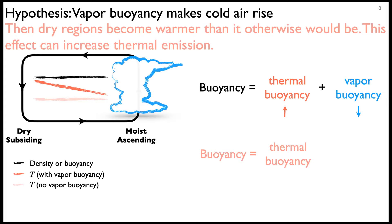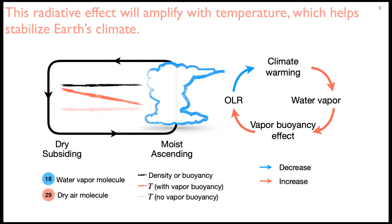So if we don't have vapor buoyancy in the atmosphere, buoyancy is simply a function of temperature, which will be horizontally uniform — the flat red line here. Comparing the two temperatures, you find that with vapor buoyancy, the dry column will be substantially warmer. The warmer temperature can increase outgoing longwave radiation — a radiative effect. In climate warming, there will be more water vapor in the atmosphere, so we expect vapor buoyancy to become increasingly important, amplifying this radiative effect, which will stabilize Earth's climate. That is a clear-sky negative climate feedback, and that is something we're going to test today.